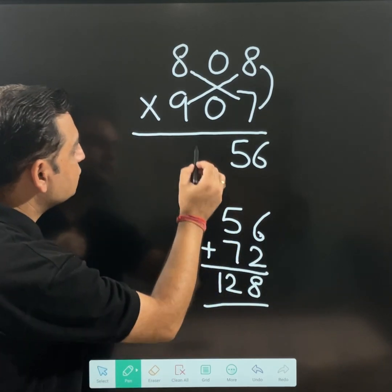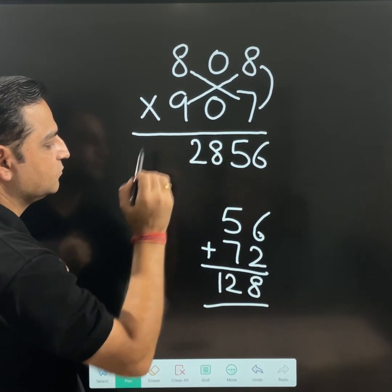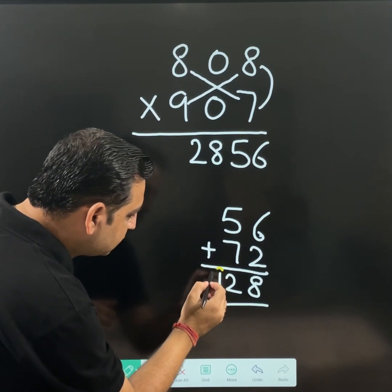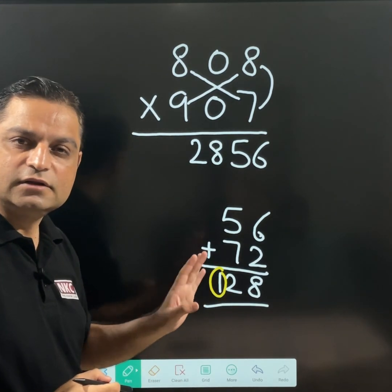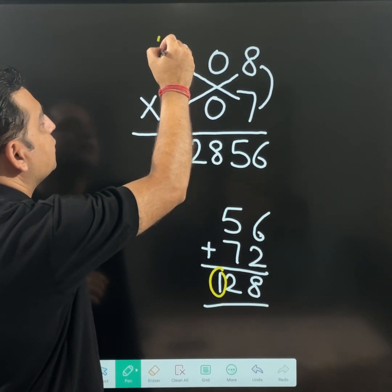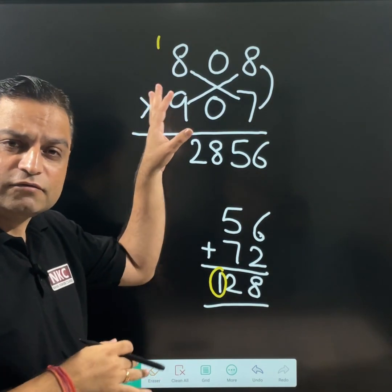This 2, 8—28 as it is. You will write as it is. I know that 1 is left. This 1 is still there. I am just writing 1 here so that I can remember that 1 is still left.